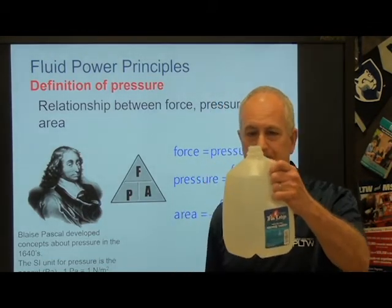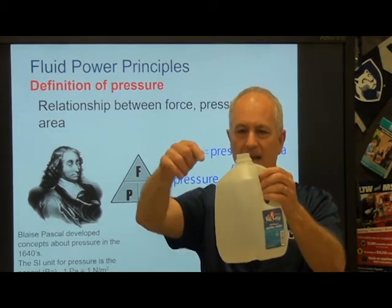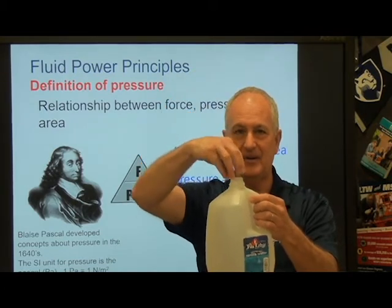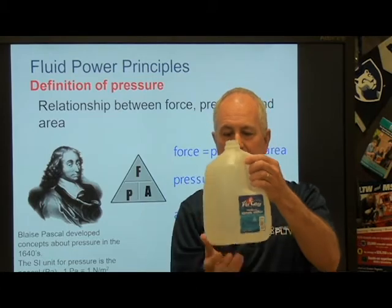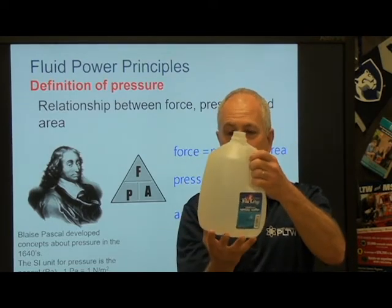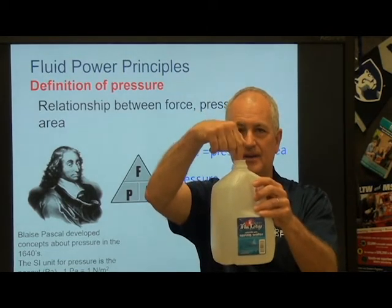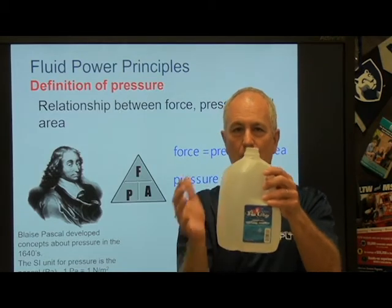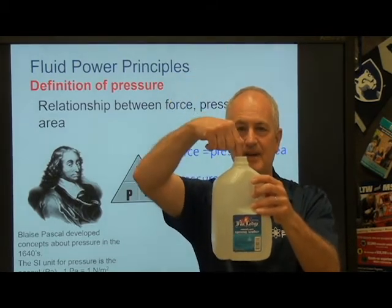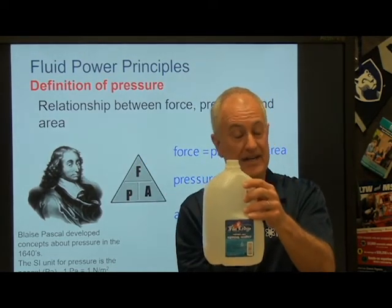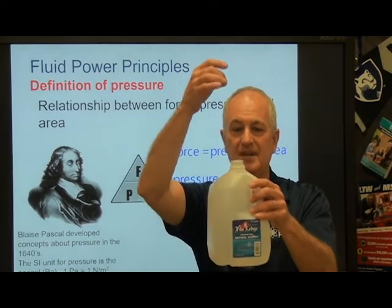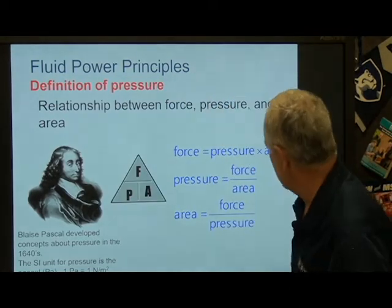If we take a cylinder filled with fluid and the opening at the top is two square inches, and we press down with 10 pounds of force, Pascal's Law says that 10 pounds per square inch is exerted equally everywhere throughout the cylinder. If the bottom is 100 square inches — 50 times greater than the top — then every one of those 100 square inches experiences that 10 PSI. The force is multiplied by the proportion between the two areas. Ten pounds of force becomes multiplied significantly at the larger end.